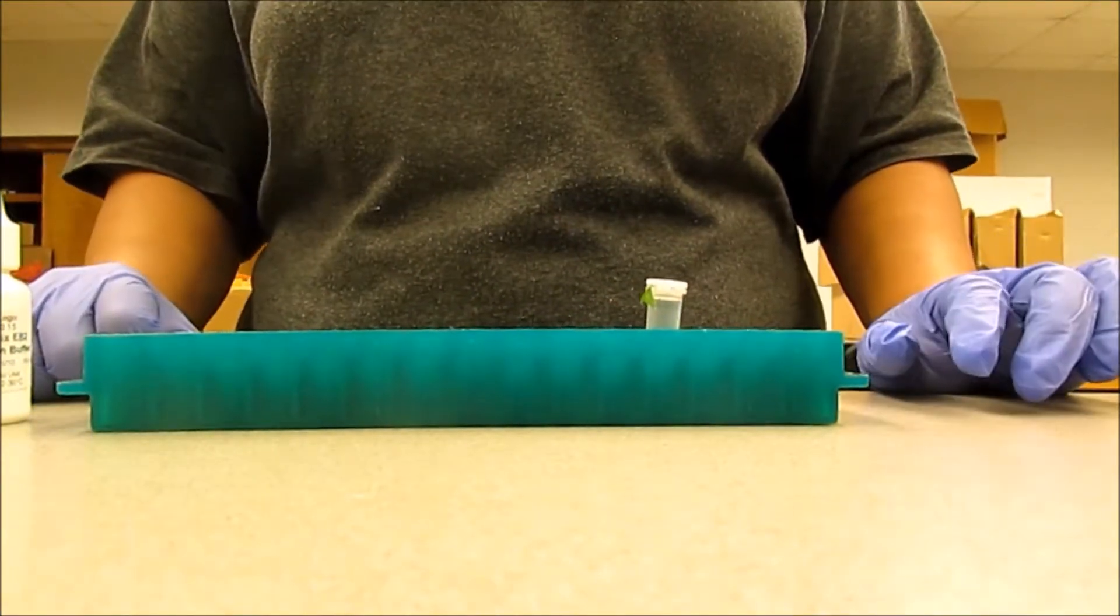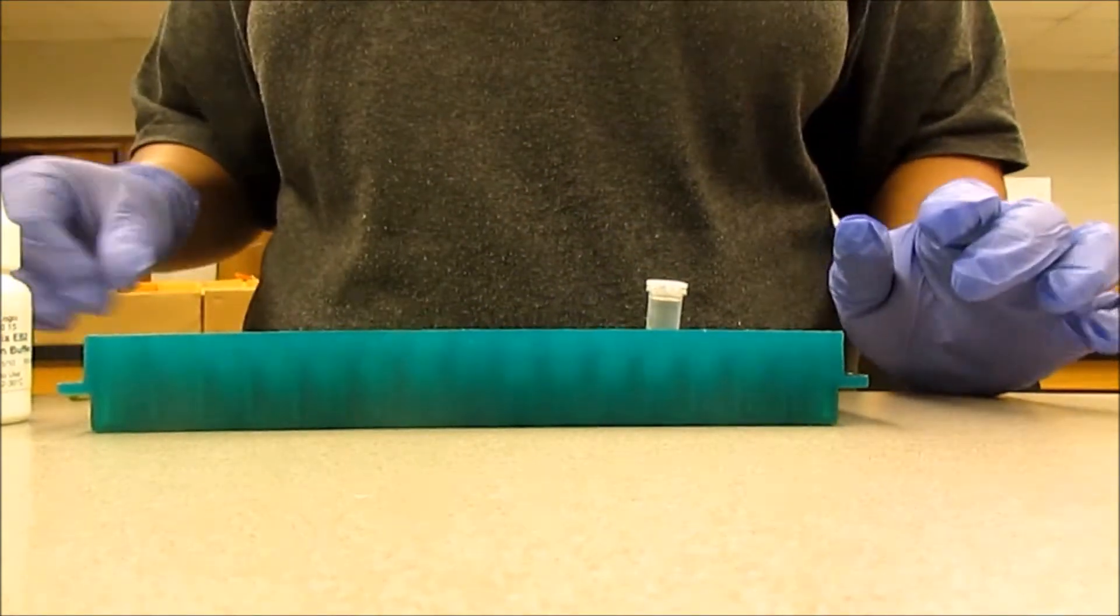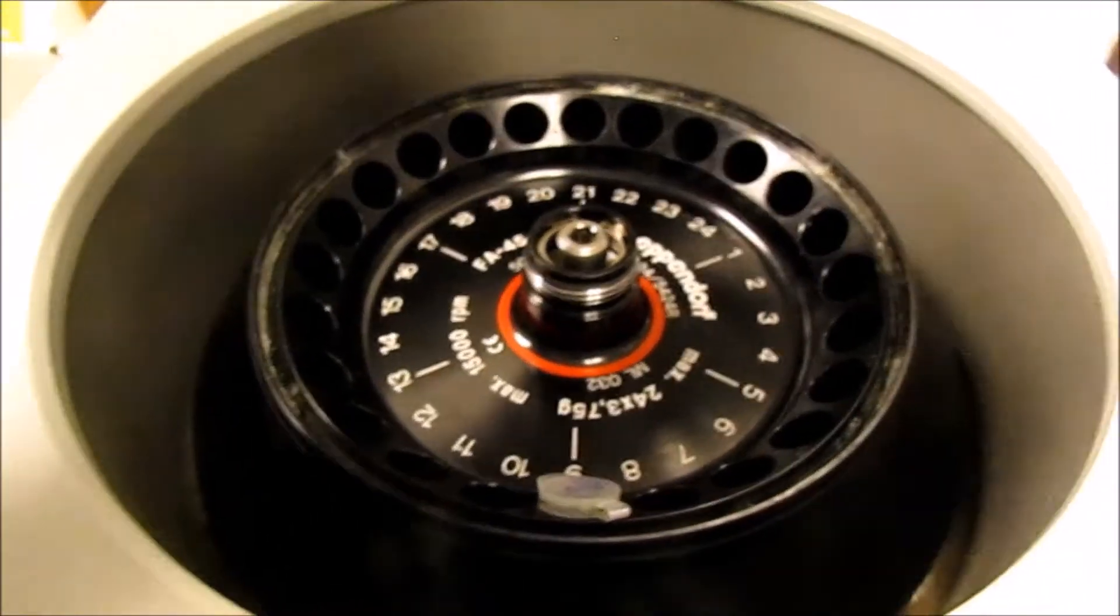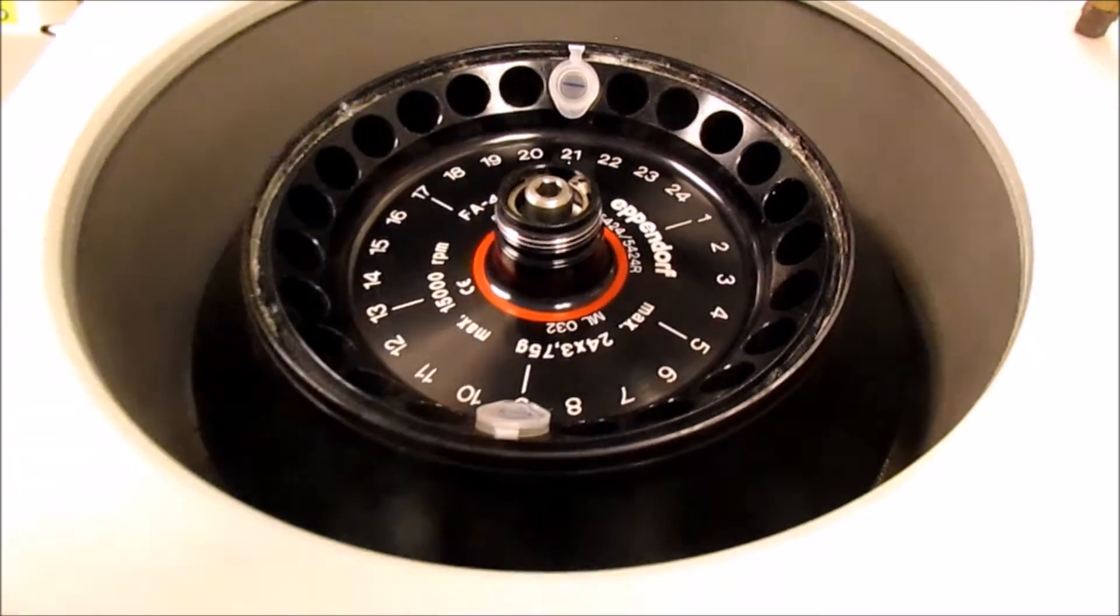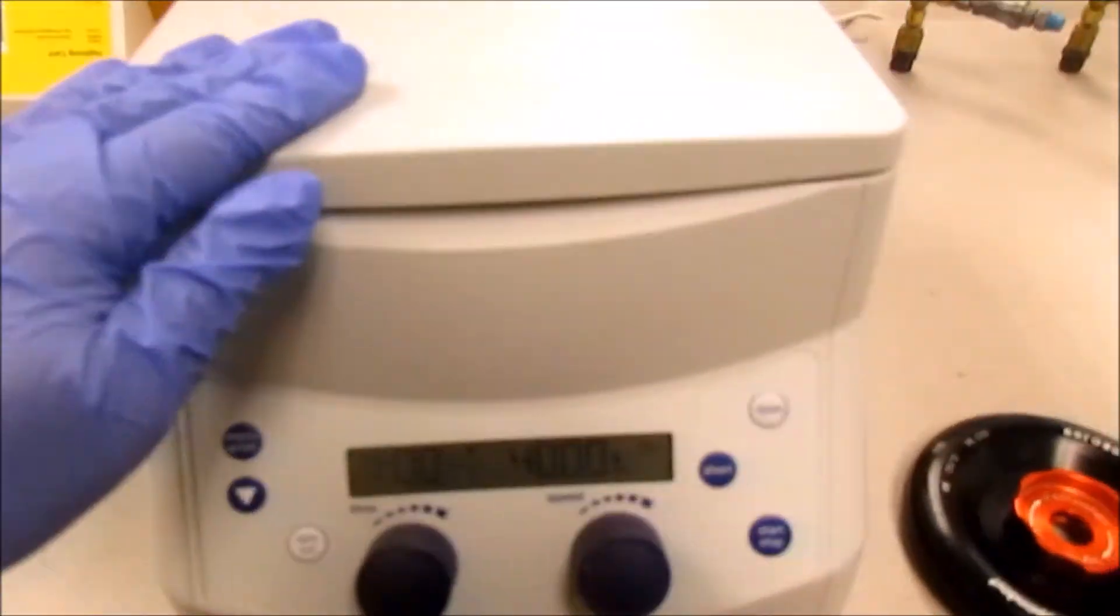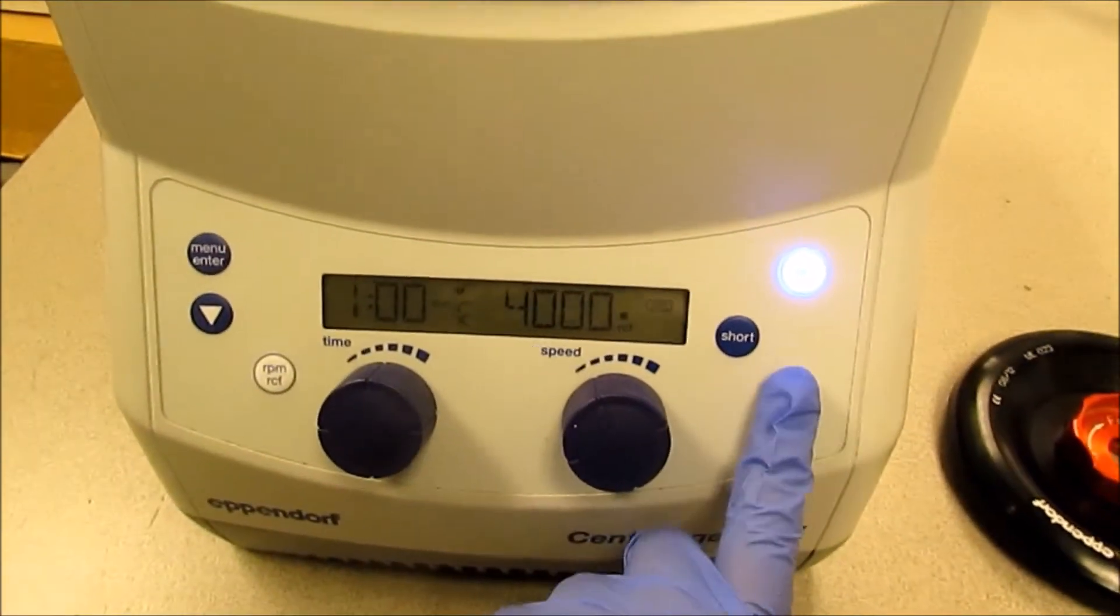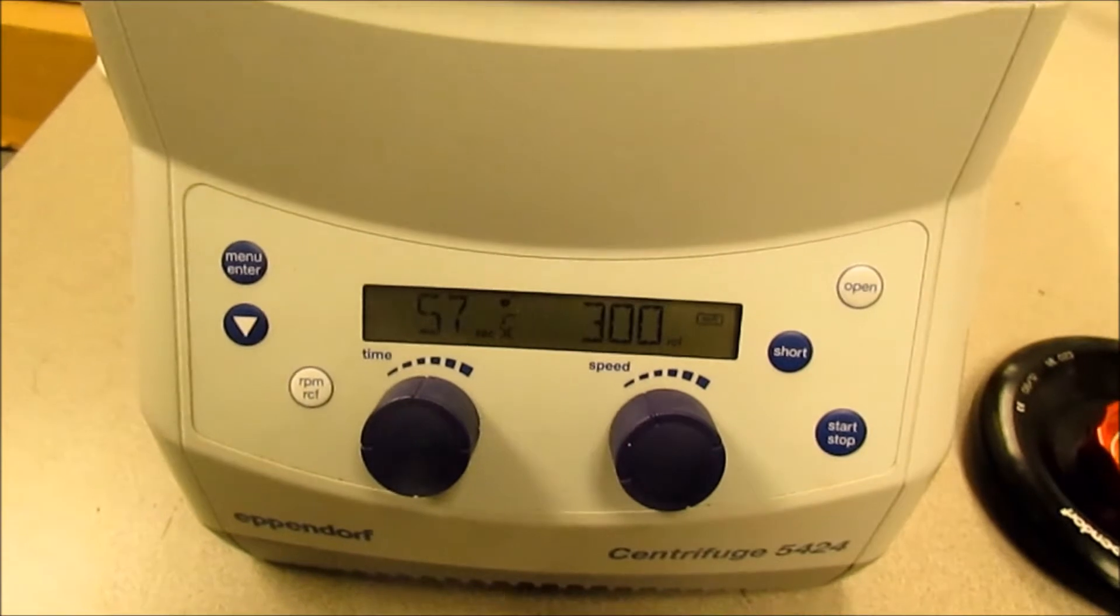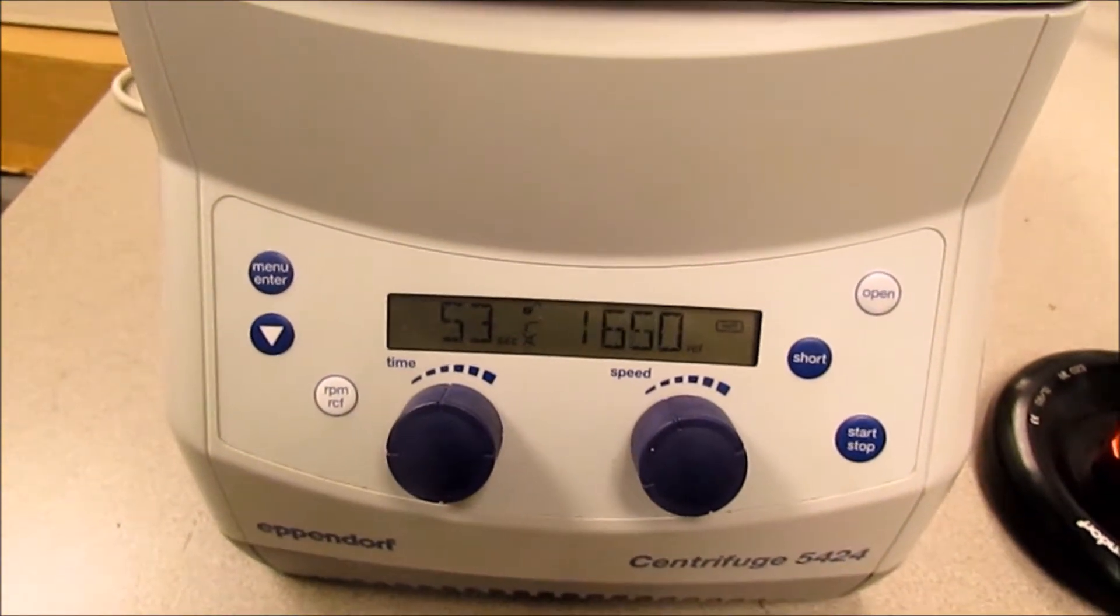After grinding the sample, we let it rest for 30 seconds, after which we centrifuge the samples. We just have to centrifuge for about 1 minute at 4000 RPM.